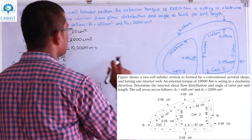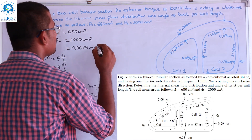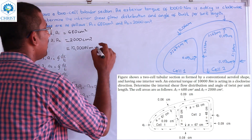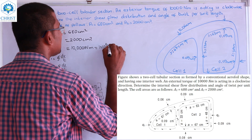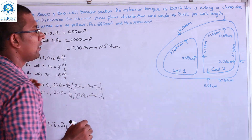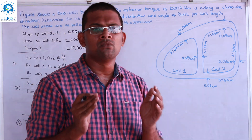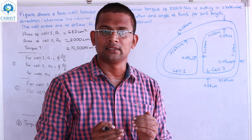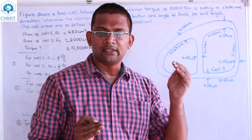Since the dimensions are given in centimeters, we convert the torque: 10,000 N·m equals 1 × 10⁶ Newton-centimeters.